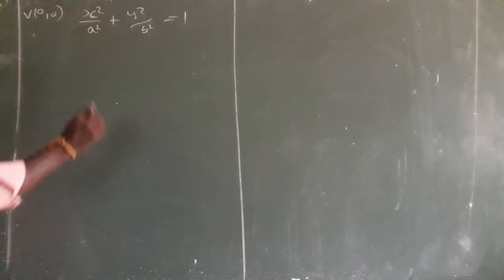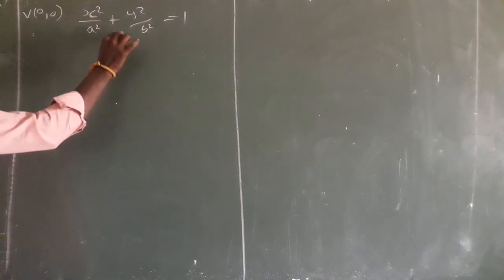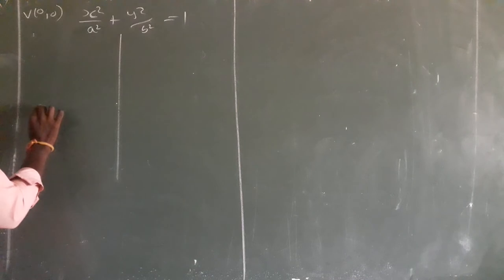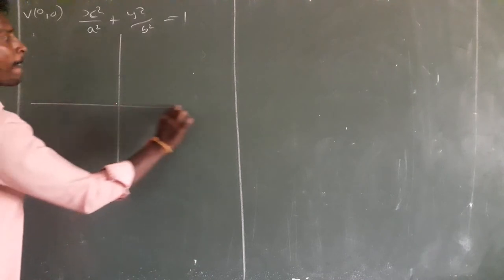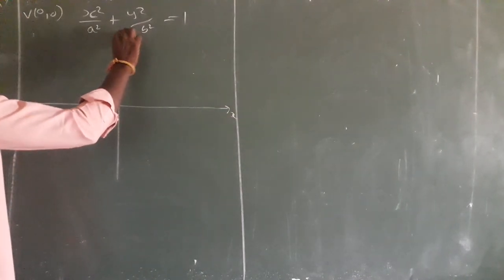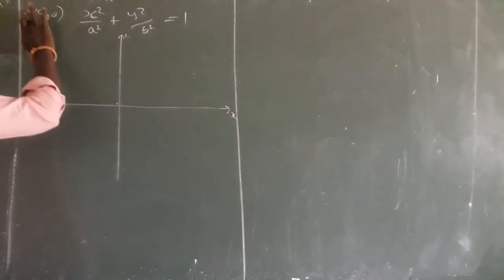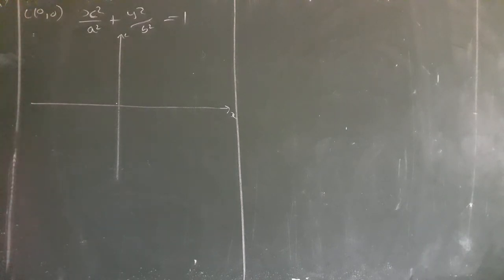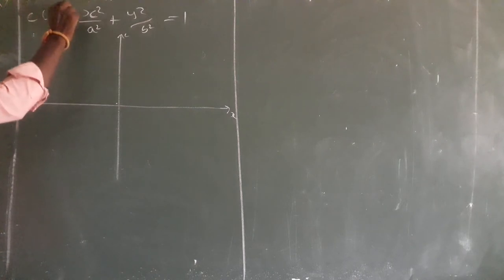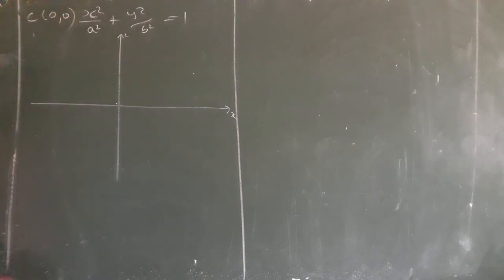So how is the diagram? The diagram is like that. For the center, instead of the word vertex, you use the word center — center (0,0). In the parabola you use vertex, but here you use center and vertex. Focus is also there.